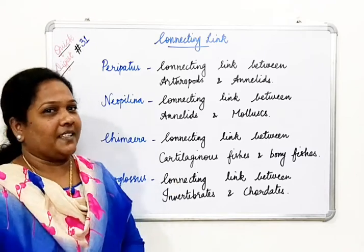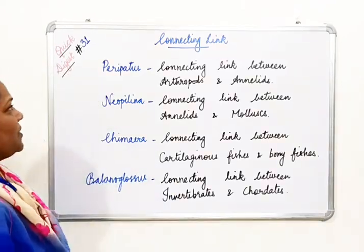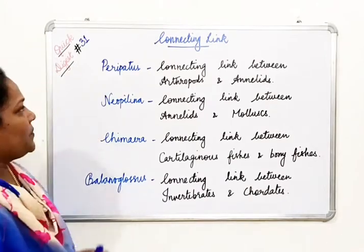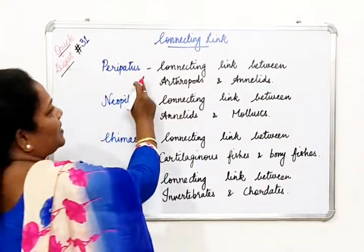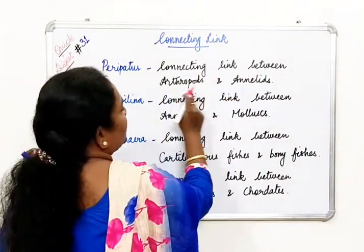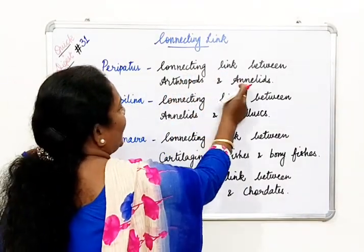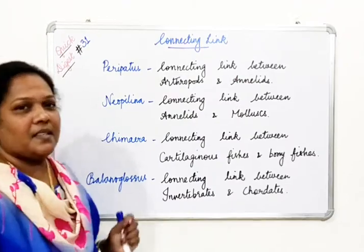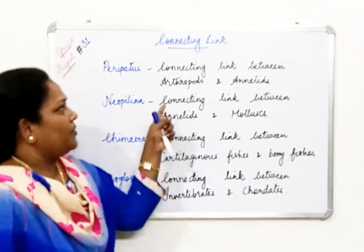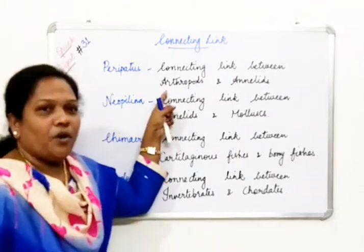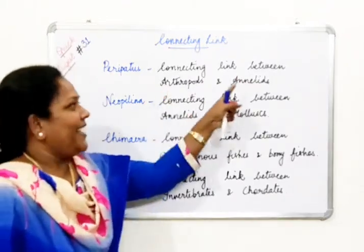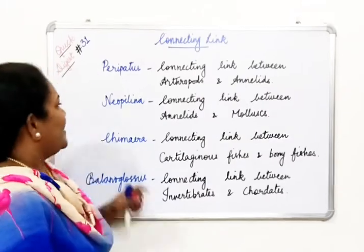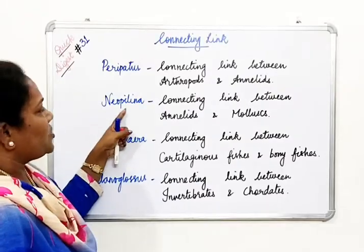The first example is Peripatus. Peripatus is a connecting link between arthropods and annelids. This Peripatus has the characters of both phylum Arthropoda and phylum Annelida.